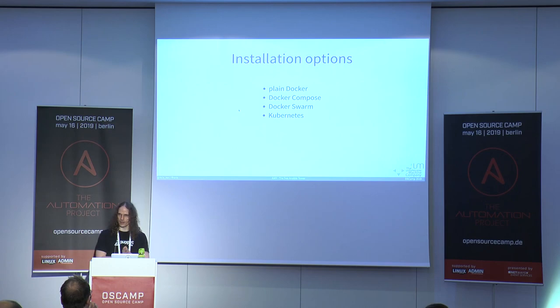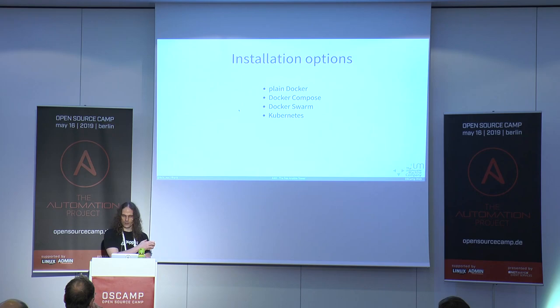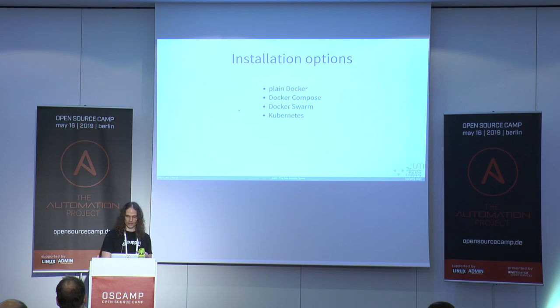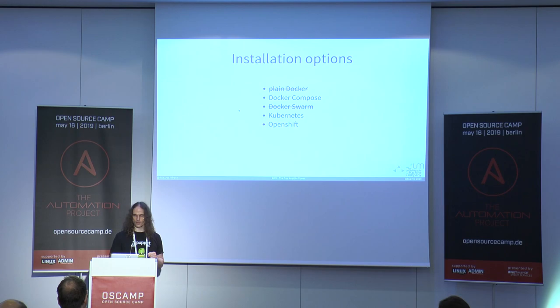When I started with AWX a year ago there were four options: just run Docker and download the containers, use Docker Compose, Docker Swarm, or Kubernetes. This has shifted a little. You can no longer use just Docker - you have to go with Compose. Swarm is no longer a thing, and OpenShift is now also an option. But everything will still be in containers, neat and clean.